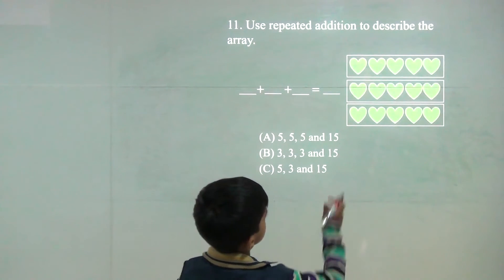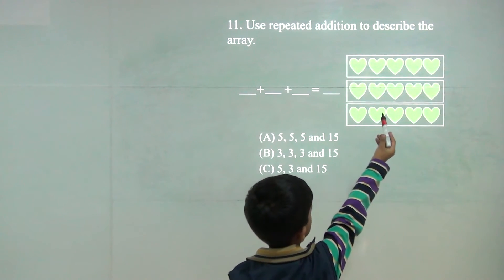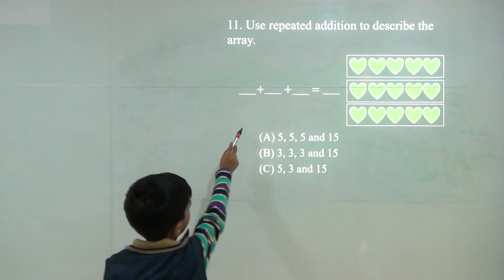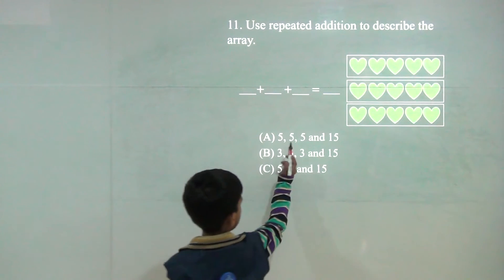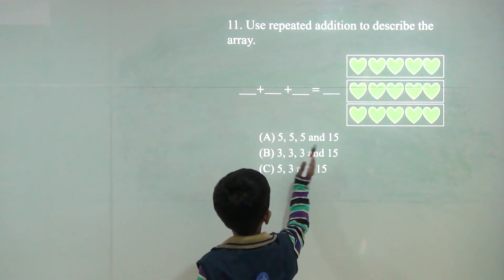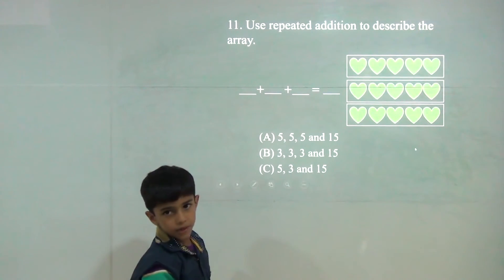Now here I have 1, 2, 3, 4 and 5. So 5, 5, 5, 5, 5, 5, 5 is equal to 50. So answer would be A.